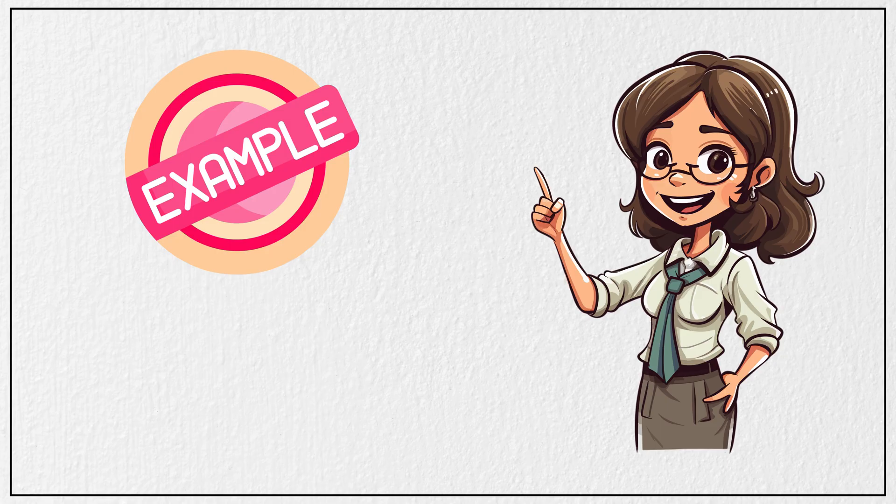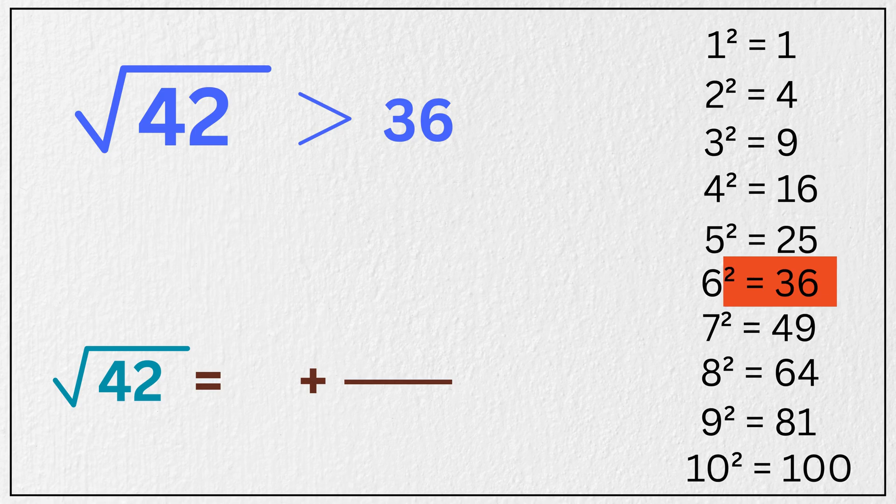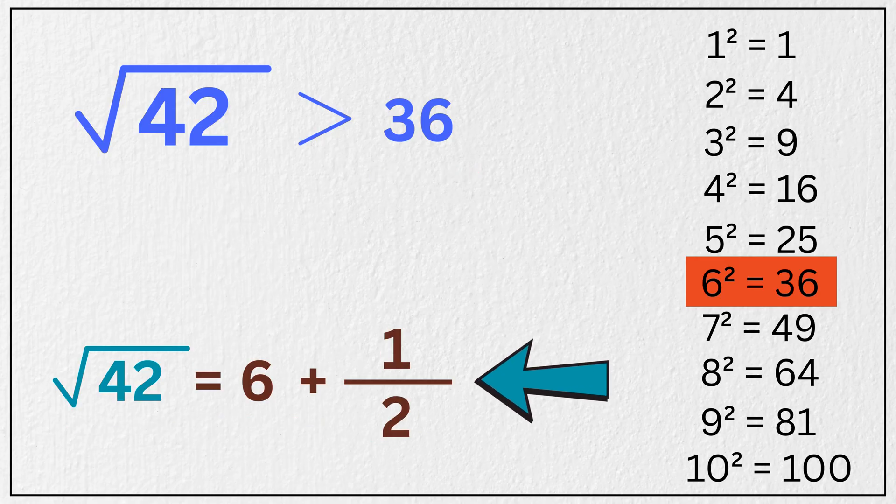Now let us try another example. The square root of 42. The perfect square number that is just less than 42 is 36, and its square root is 6. Write it here. Now subtract 36 from 42 to get 6 and multiply this with 2 to get 12. 6 over 12 is 1 over 2, or 0.5.